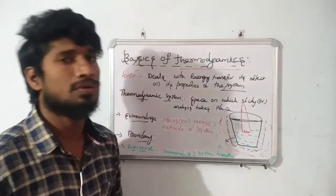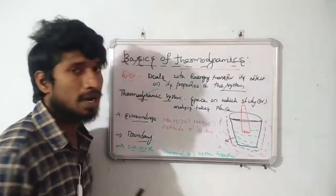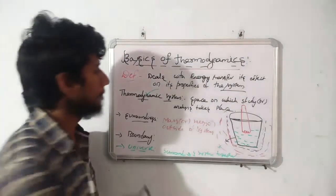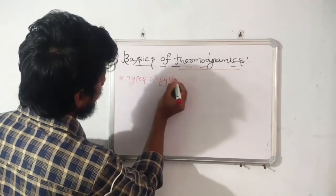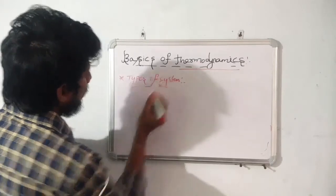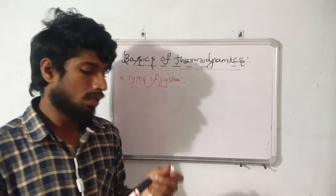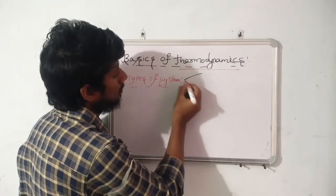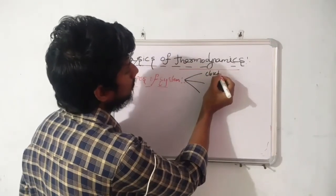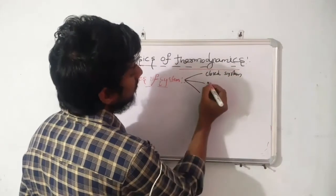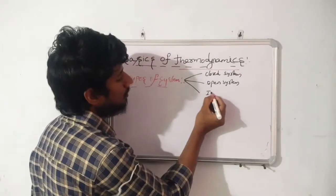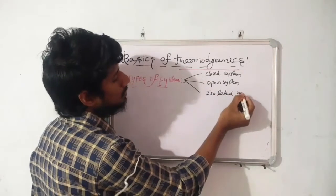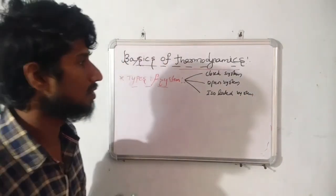These are the basic definitions related to thermodynamics. Next we are going to discuss about what are the types of thermodynamic systems. Generally the types of systems are three: the first one is the closed system, the second one is the open system, and the third one is the isolated system.